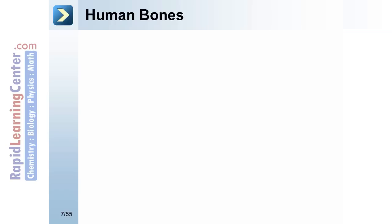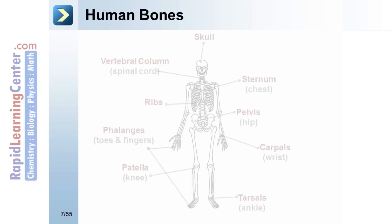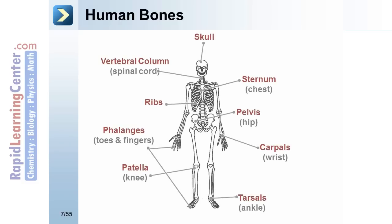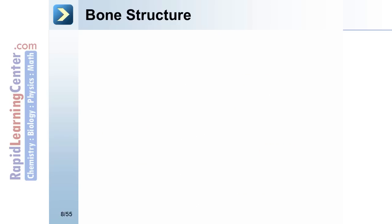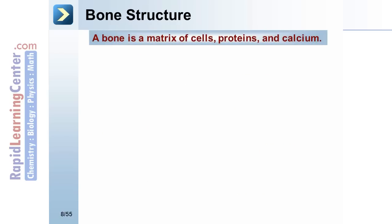Human bones include the skull, sternum, pelvis, carpals, tarsals, patella, phalanges, ribs, and vertebral column. A bone is a matrix of cells, proteins, and calcium.